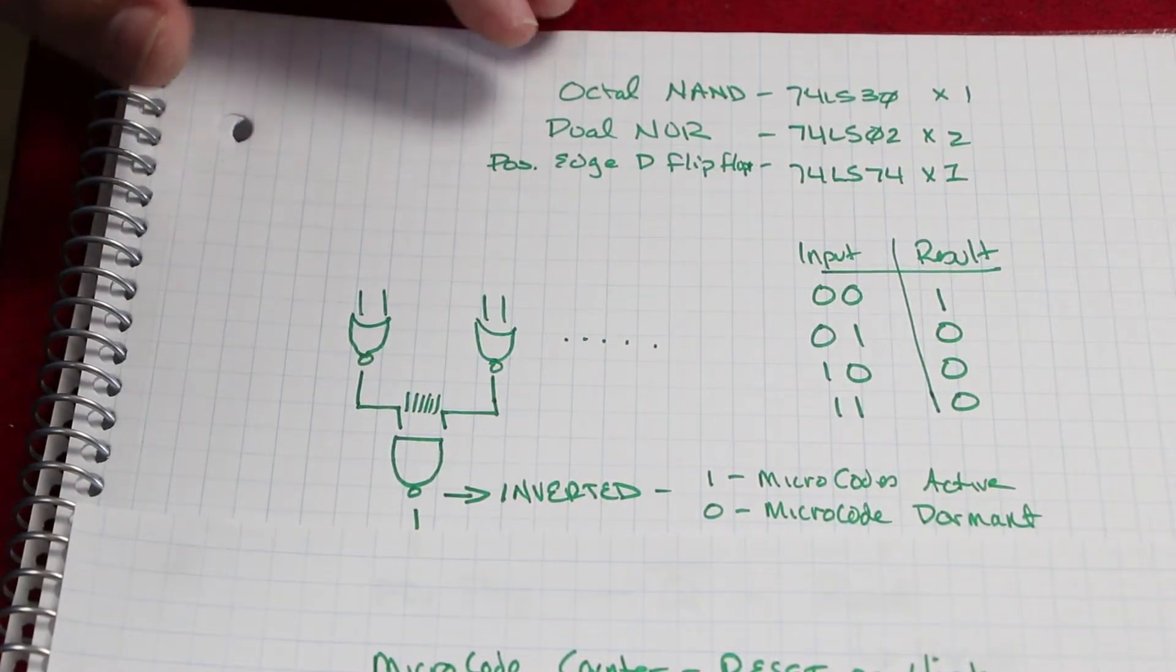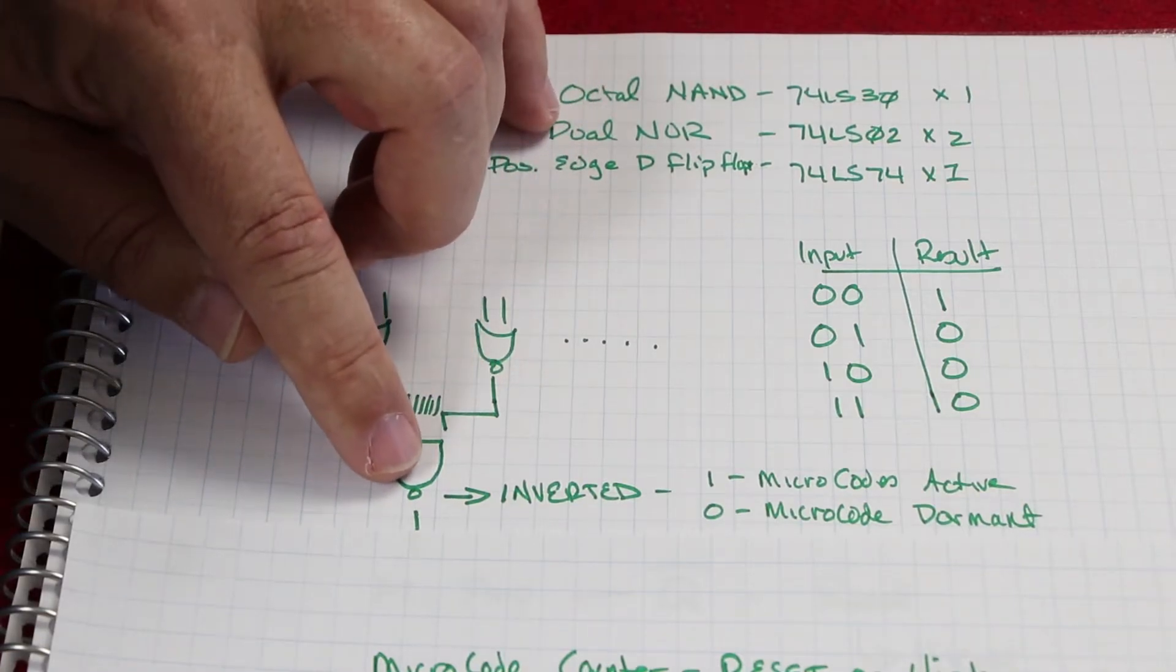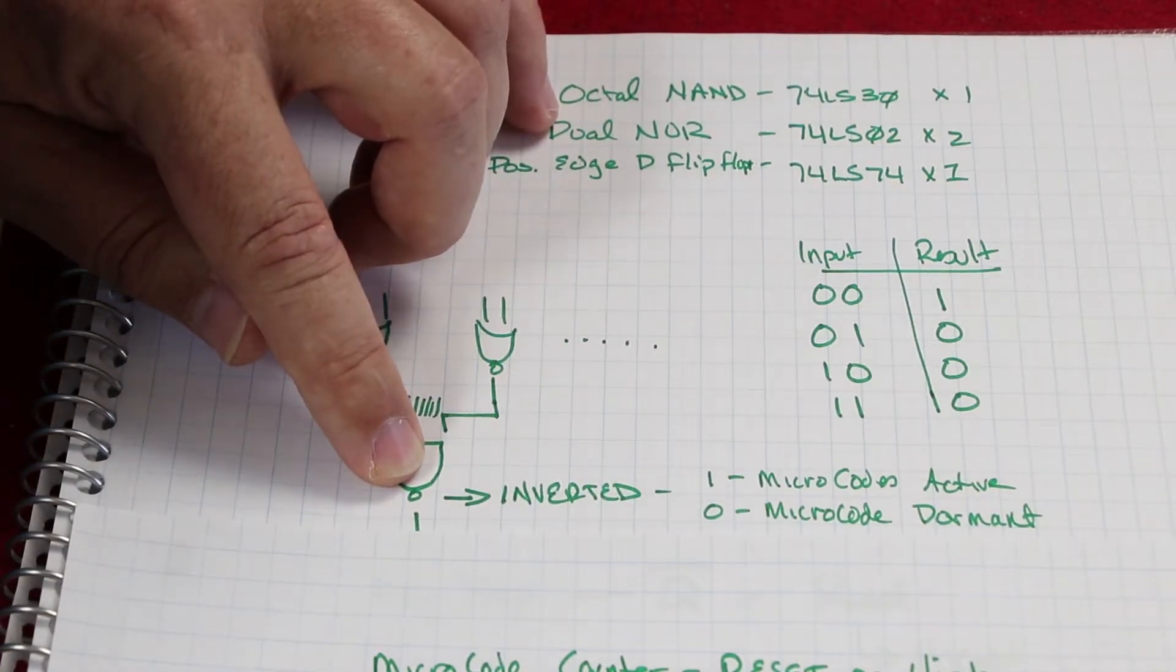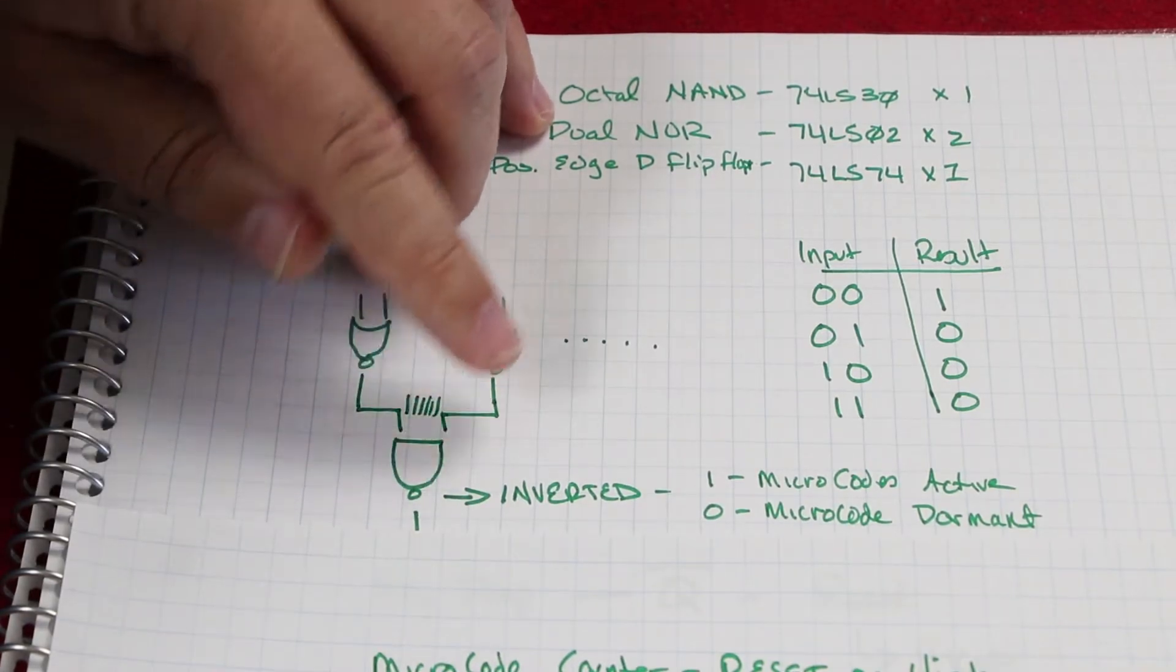In a NAND gate, all of the inputs will have to be high in order for the output to be low. Otherwise, the output is high. That's not the result that we want.